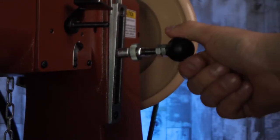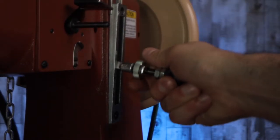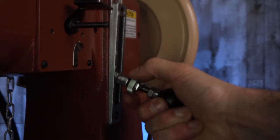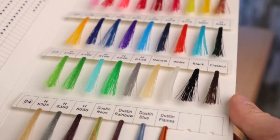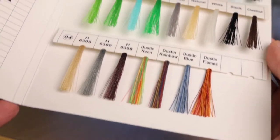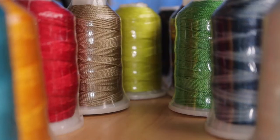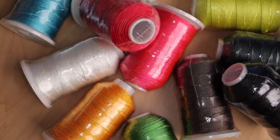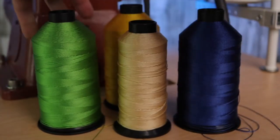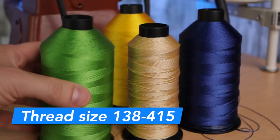Let's talk about thread. There are so many options, colors, and suppliers for thread. A good suggestion is to order a thread color chart to help you decide what color and thickness of thread for your project. The standard thread size that the Cobra Class 4 can use is 138 to 415.